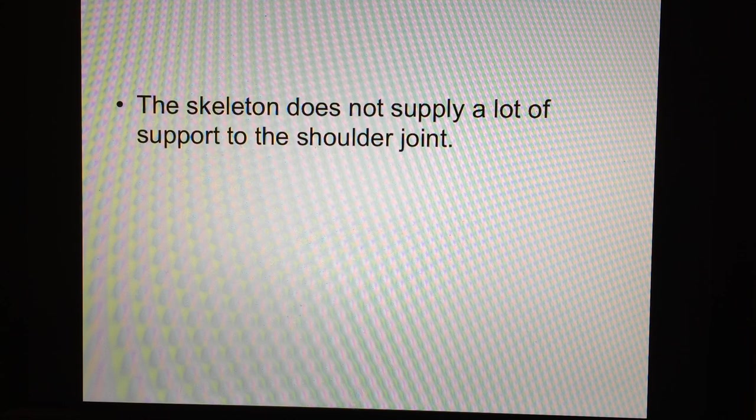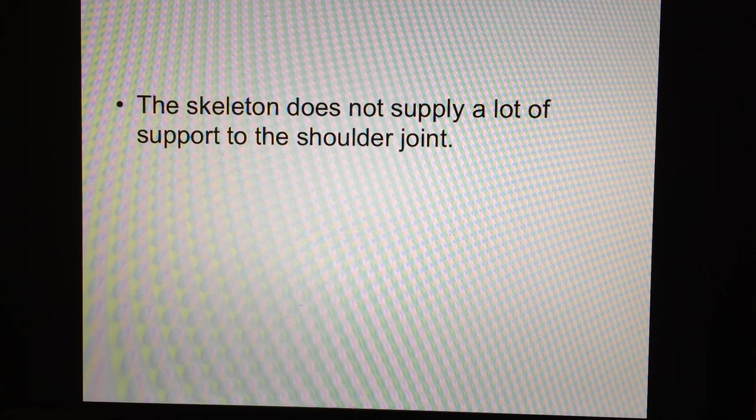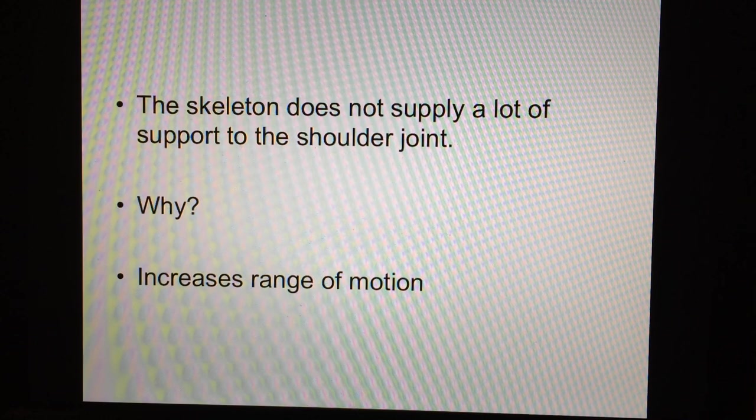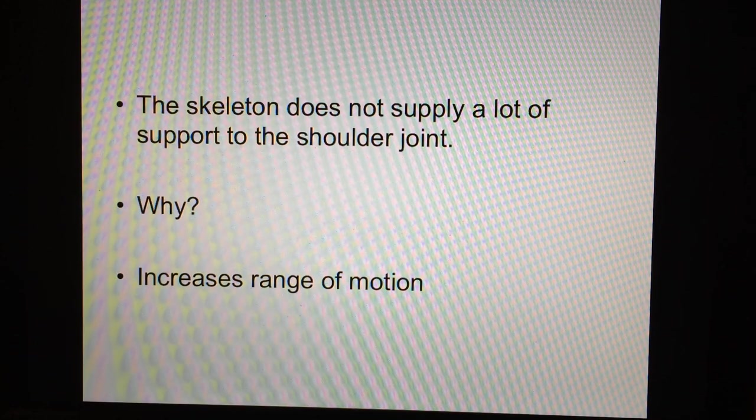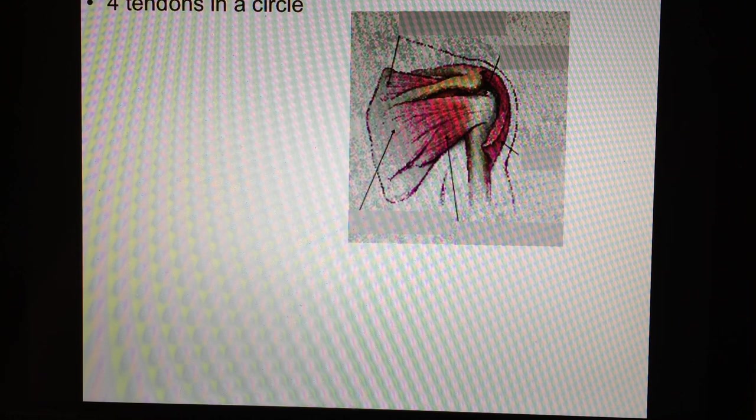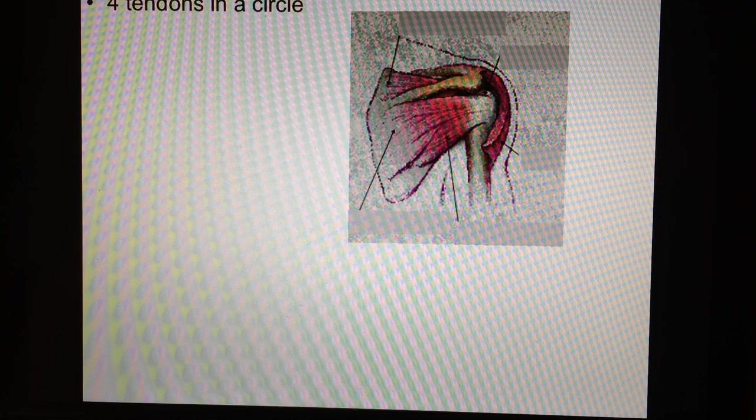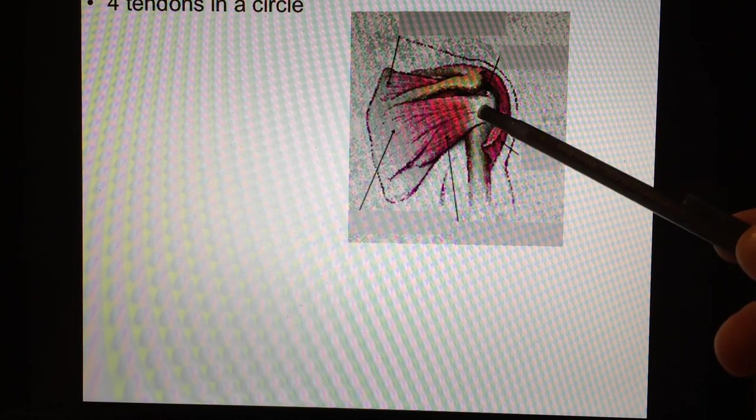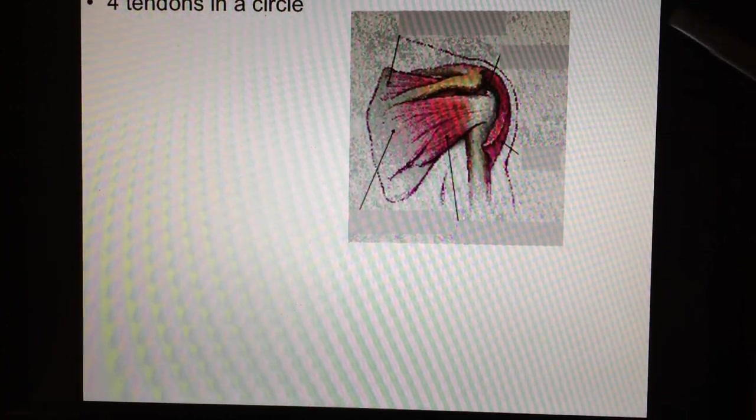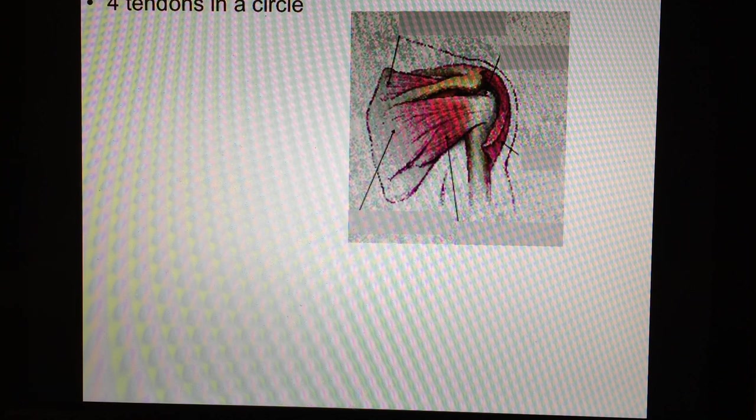So there's really no solid bone-to-bone contact. So how do we keep this thing in there? This increases range of motion. Now, how do they do it? Four tendons in a circle. This is how you stabilize this joint. There's no direct bone-to-bone contact. To get range of motion, we've got to make sure this thing is loose. So it's going to use four tendons. One in the front, one in the bottom, one on the top, one in the back. That's why it's so easy to dislocate a shoulder.